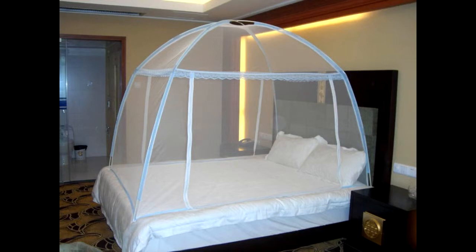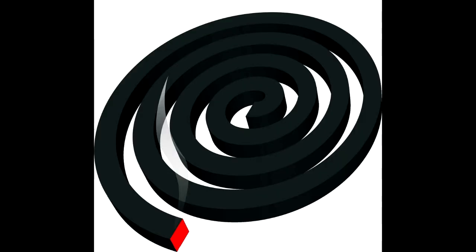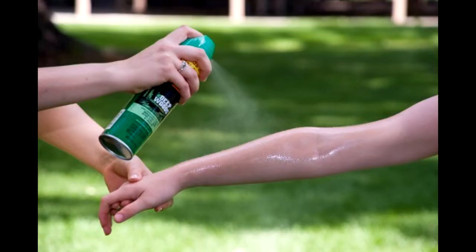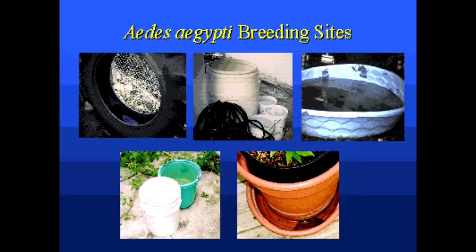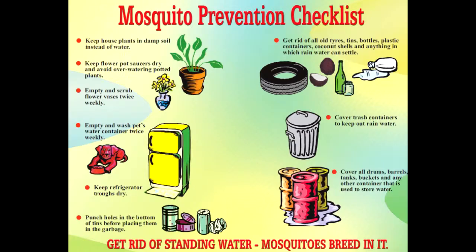Use mosquito nets while sleeping during daytime. Mosquito coils or other insecticide vaporizers may also reduce indoor biting. Eliminate mosquito breeding sites by emptying standing water from flower pots and buckets. Change the water in pet dishes and bird baths weekly. Drill holes in tire swings so water drains out, and keep children's wading pools empty when not in use.